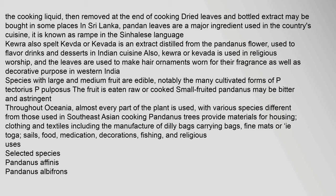In western India, species with large and medium fruit are edible, notably the many cultivated forms of P. Tectorius and P. Pulposus. The fruit is eaten raw or cooked; small-fruited pandanus may be bitter and astringent. Throughout Oceania, almost every part of the plant is used, with various species different from those used in Southeast Asian cooking. Pandanus trees provide materials for housing, clothing and textiles including the manufacture of dilly bags, carrying bags, fine mats, sails, food, medication, decorations, fishing, and religious uses.